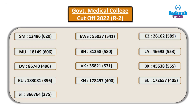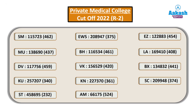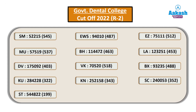This cutoff data is based on 2022 round 2 counseling and gives you an idea of the required rank. The same discussion applies to private medical colleges, where the chart on screen clearly shows category-wise rank and cutoff marks. Similarly, for government dental colleges, category-wise rank and cutoff marks are clearly mentioned on the screen.